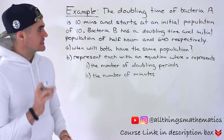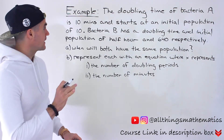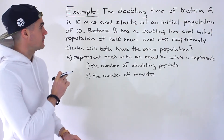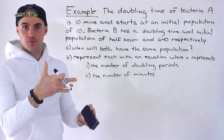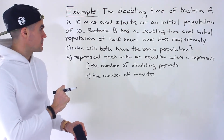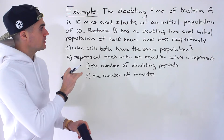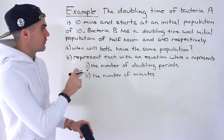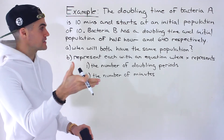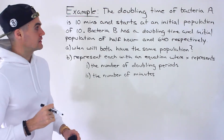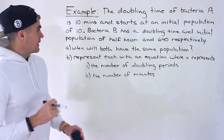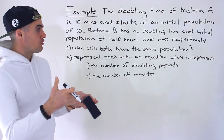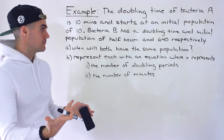We're told that the doubling time of bacteria A is 10 minutes and it starts at an initial population of 10, meaning the quantity of the bacteria is doubling every 10 minutes. Bacteria B has a doubling time of half an hour — so it's doubling every 30 minutes — and an initial population of 640. Given that scenario, part A asks us to figure out when both bacterias will have the same population.